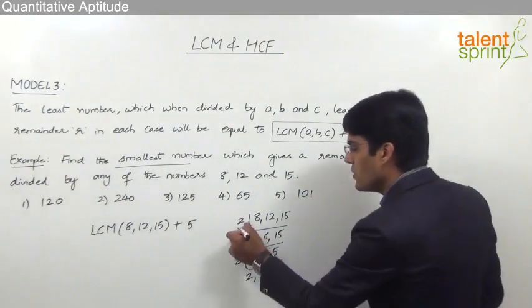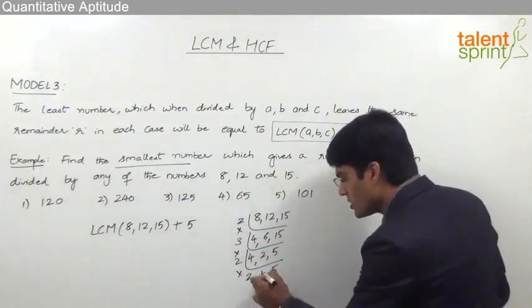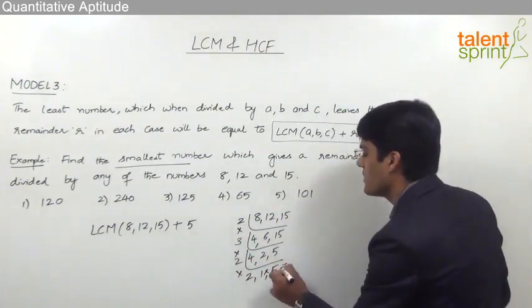So the LCM will be 2 into 3, 6, 6 into 2, 12, 12 into 2, 24, 24 into 5 that is equal to 120.